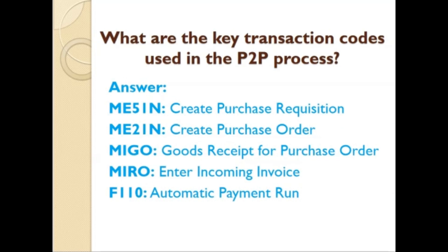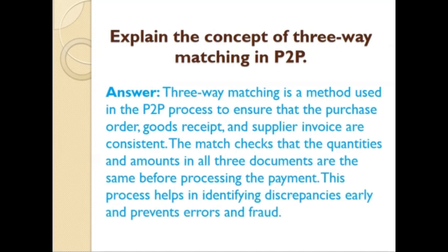What are the key transaction codes used in the P2P process? They include codes for creating a purchase requisition, creating a purchase order, and posting goods receipt for a purchase order. Regarding three-way matching: it is a method used in the P2P process to ensure that the purchase order, goods receipt, and supplier invoice are consistent. The match checks that quantities and amounts in all three documents are the same before processing payment. This process helps in identifying discrepancies early and prevents errors and fraud.